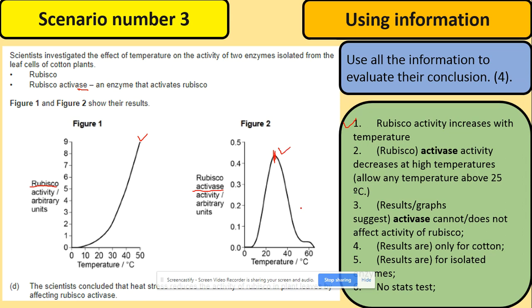And the results suggest that activase cannot affect activity of rubisco. Where is this coming from? It's coming from the fact that rubisco is still active after this temperature while rubisco activase is not. And then the rest of the information comes from the text. So results are only for cotton. That's what we've got here. It's only for the cotton plants.